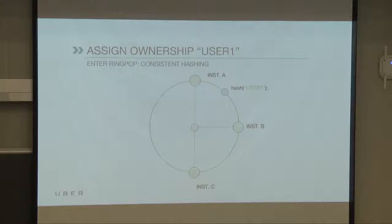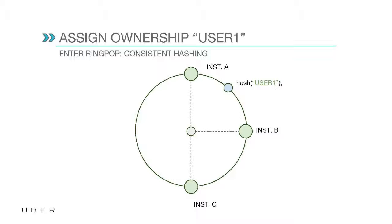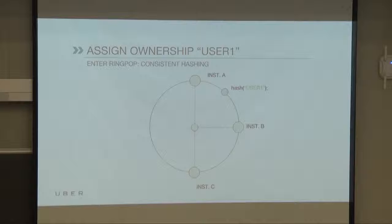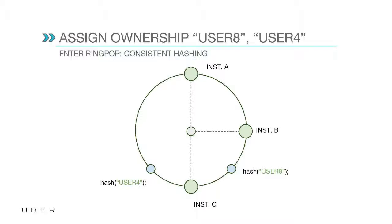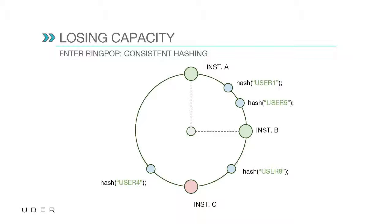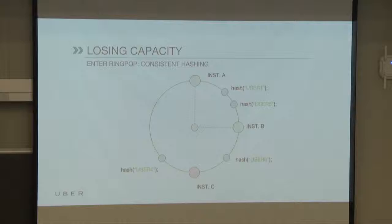Treating the ring as a pie, we divide up the key space and assign ownership. Anything that hashes between instance A and B is owned by B — it moves clockwise. Anything between B and C belongs to C; from C to A belongs to A. If a request comes in for user1 and it hashes between A and B, B owns that. If there's a failure detected by the membership protocol, that member is ejected from the ring and rebalancing occurs — anything previously belonging to C, like user8, now belongs to the next nearest instance, which is A.